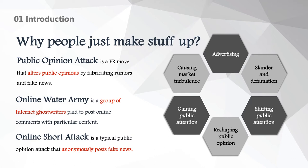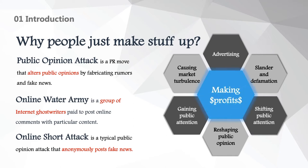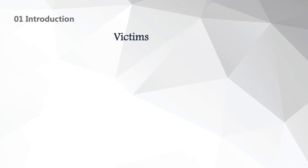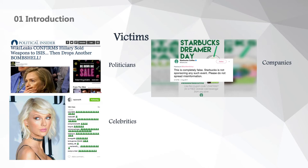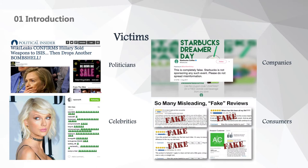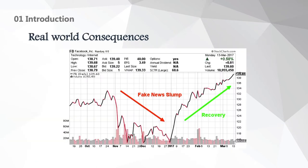In fact, there is one ultimate goal behind all six purposes, and that is making money. Now, let's talk about potential victims. Fake news actually has a wide impact on us — anyone can be the victim. Politicians, celebrities, and companies suffer from defamation and slander mostly. And weak consumers would be tricked into purchases because of fake reviews or fake news. Furthermore, fake news can also bring serious negative consequences, like stock market turbulence.